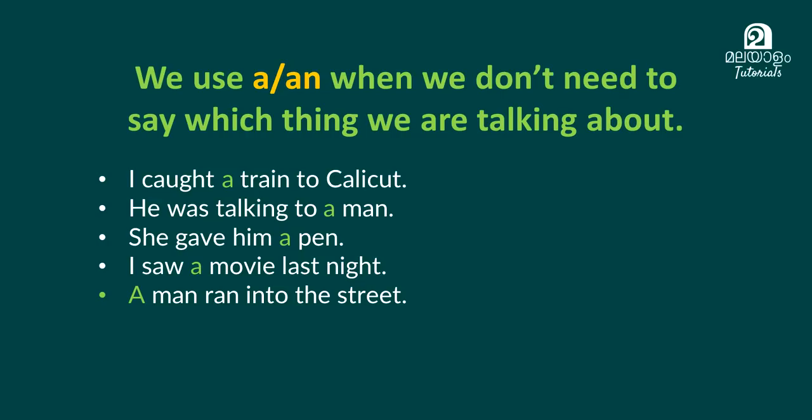I caught a train to Calicut. I got a train to Calicut. We use 'a' or 'an' when we mention something for the first time — we don't have to say which specific train. I went to the train.